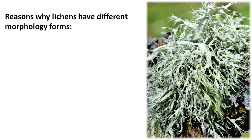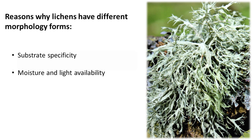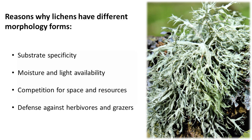Here are some reasons why lichens have different morphology of the body: substrate specificity, availability of moisture and light, competition for space and resources, and defense against herbivores and grazers.